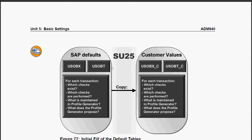The first time, when you click on item number 1 in SU-25, you basically copy the pristine values into your customer tables: USOBX_C and USOBT_C. From that point on, once you are done with that, you will be using SU-24 to maintain the customer values.